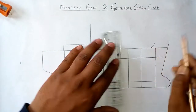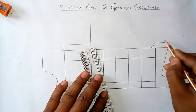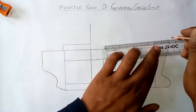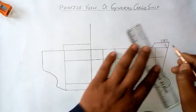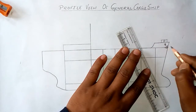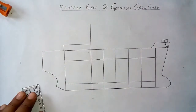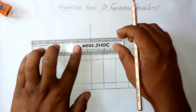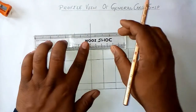Here is the forecastle deck, the windlass used in the anchorage, and the anchor of the ship. We have two anchors — one on the port side and one on the starboard side.